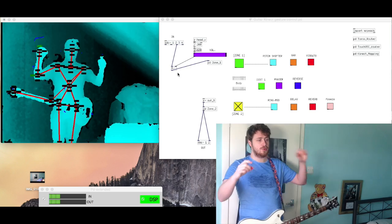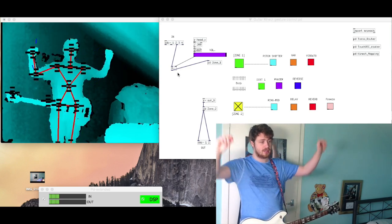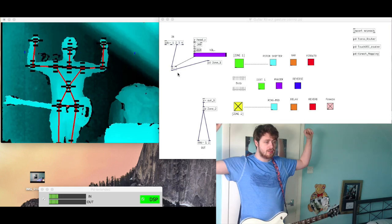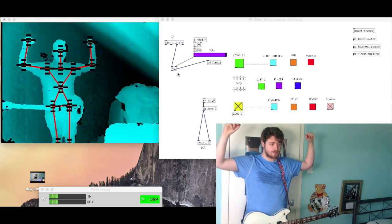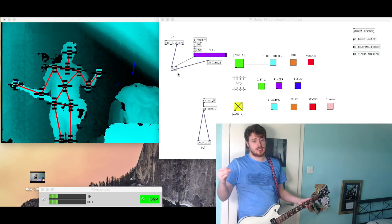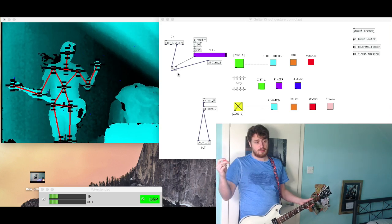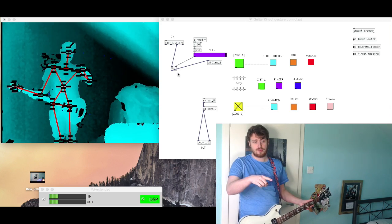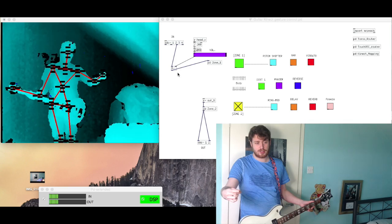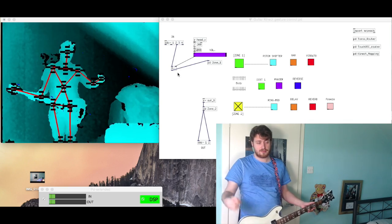So the way it's configured is that the Kinect camera tracks the body as you can see on the screen just now. What I've done is took the information that the Kinect is feeding to Pure Data and applied it to effects.